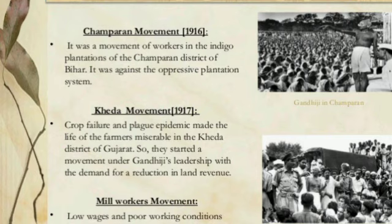Then Gandhi moved to Kheda in Gujarat. In 1917, there was a movement launched in Gujarat due to crop failure and a plague epidemic, which made the life of farmers miserable in Kheda. They started a movement under Gandhiji's leadership with the demand for a reduction in land revenue. The movement was successful under Gandhiji's leadership.